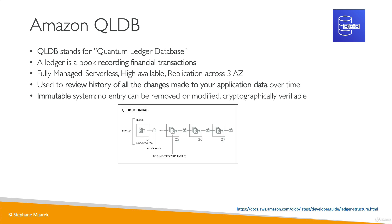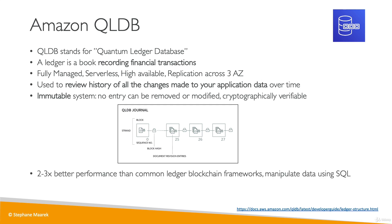Behind the scenes there is a journal, and a journal has a sequence of modifications. Anytime a modification is made, a cryptographic hash is computed, which guarantees that nothing has been deleted or modified. This can be verified by anyone using the database. This is extremely helpful for financial transactions because you want to make sure that no financial transaction is disappearing from your database, making QLDB a great ledger database in the cloud. You get two to three times better performance than common ledger blockchain frameworks.